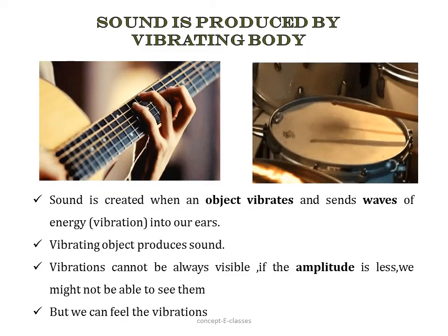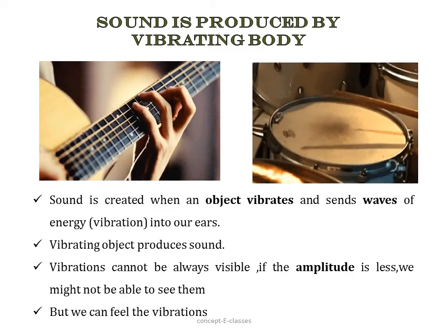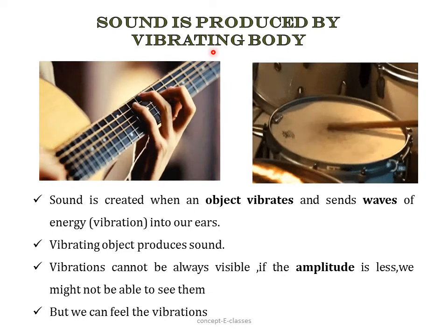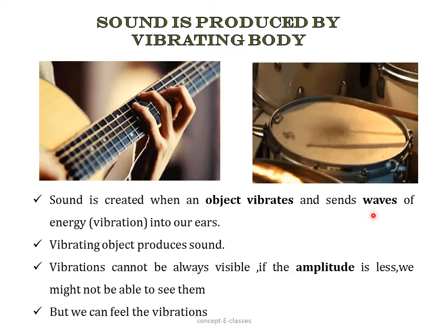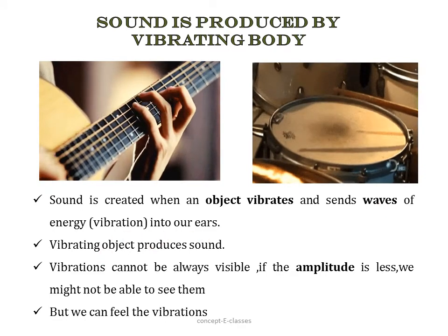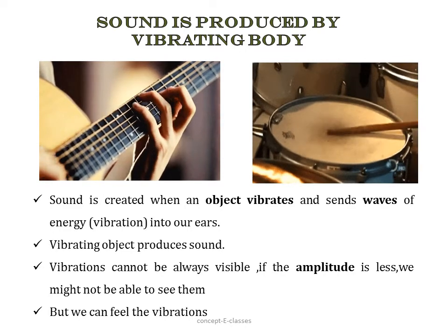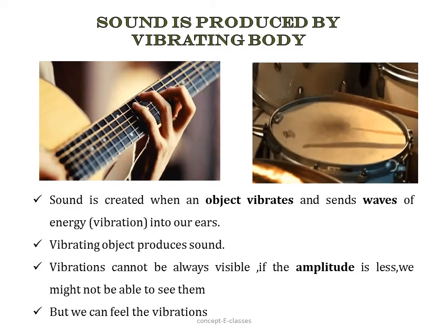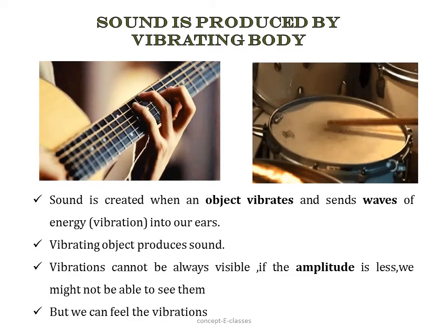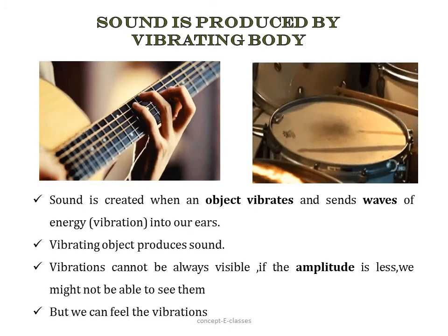Now let's see how sound is produced. The first topic of this chapter is: sound is produced by a vibrating body. Sound is a form of energy and it is created when an object vibrates. It sends waves of energy into our ears. Sound waves are formed when an object vibrates, and when these waves of energy reach our ears, we are able to hear the sound.